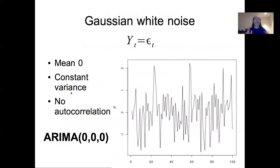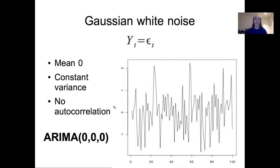An important special case is Gaussian white noise, which describes the case of mean zero, constant variance, and no autocorrelation. An ARMA(0,0,0) model is just random independent draws from a normal distribution — no trend, no autocorrelation, no need to difference the time series. It's just independent draws from a normal distribution. That's the special null case — really just the null model.